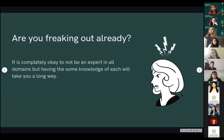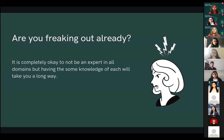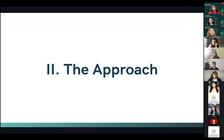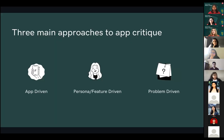I know that was a lot of information and you might be freaking out, but you don't have to be an expert at everything. Just pause and analyze how the app is going. Even basic knowledge of each domain helps — comment on UI design once or twice, focus on navigation and a few other things. Even if you miss some areas, having broad knowledge gives you a wide spectrum of tools to critique with. Now the approach — there are three main approaches to app critique: app-driven, persona or feature-driven, and problem-driven.